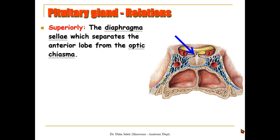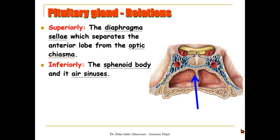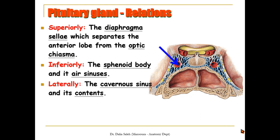Superiorly, it is related to the diaphragma sellae, which is a dural fold that separates the anterior lobe from the optic chiasma. Inferiorly, it is related to the air sinus inside the sphenoid bone. Laterally, it is related to the cavernous sinus with its contents.